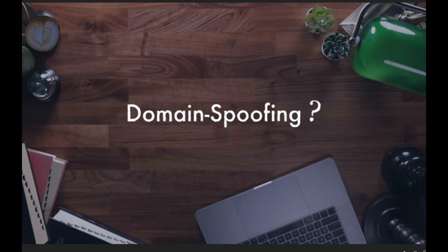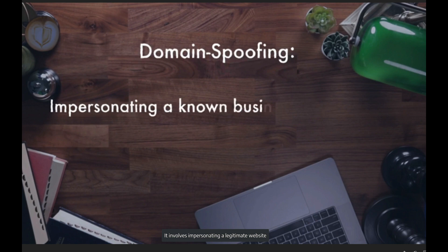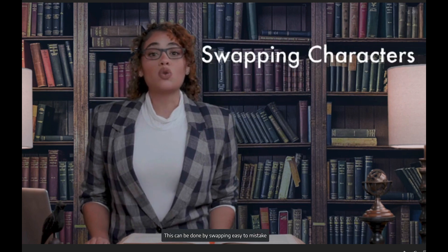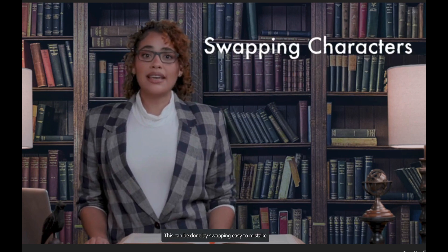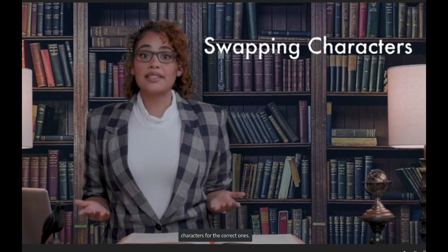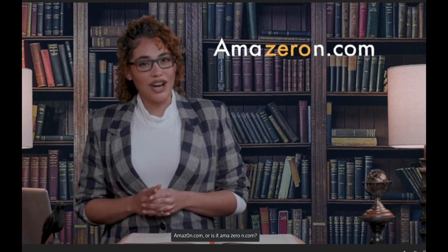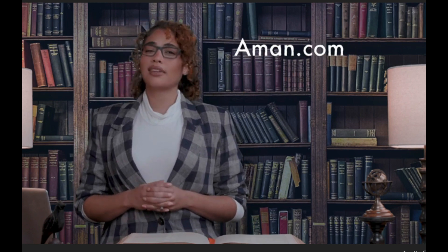It involves impersonating a legitimate website or brand by creating a domain for a website or an email address that, at a glance, looks right but actually uses clever tricks to disguise what it really is. This can be done by swapping easy-to-mistake characters for the correct ones. For example, the domain amazon.com could become amazero.com. Hmm, clever.